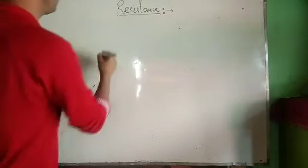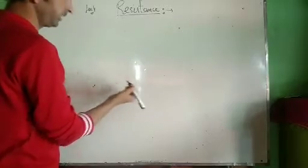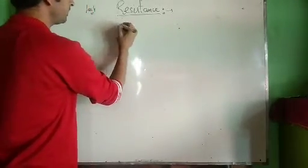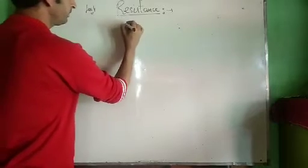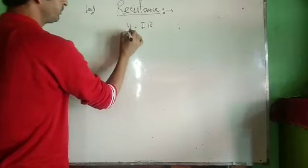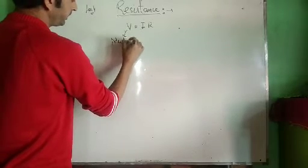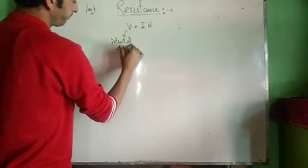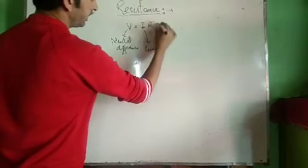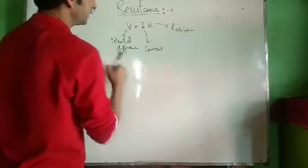In this section we will discuss Lecture 4 of Class 10th on current electricity. In this lecture we are going to discuss resistance of a conductor. We know from Ohm's law, which has already been discussed, that V is equal to IR, where V is potential difference, I is current, and R is resistance.